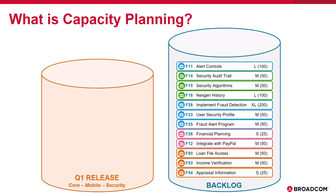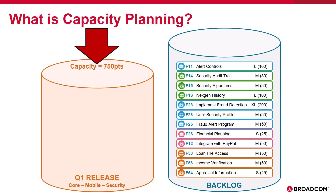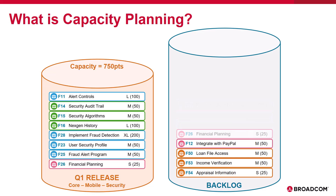Once you have the capacity of your teams and preliminary estimates in place, it's pretty simple math to understand how much of this will fit into this. You can start moving in features and assigning them to teams to build out your preliminary plan. And as planning continues, teams will drill into these features, start refining those preliminary estimates, and figure out exactly how the work will be assigned and allocated.